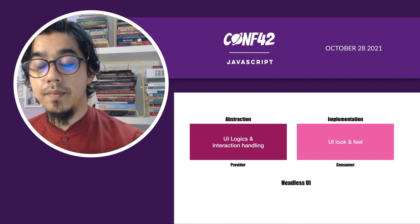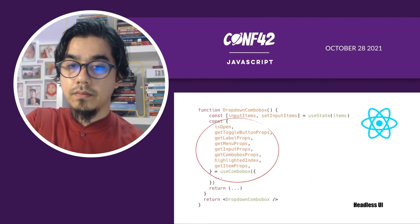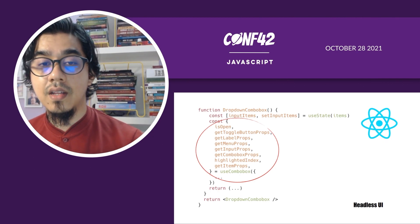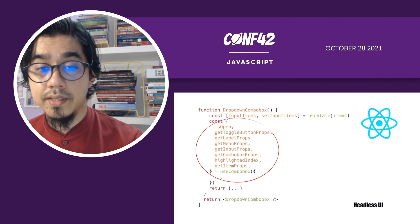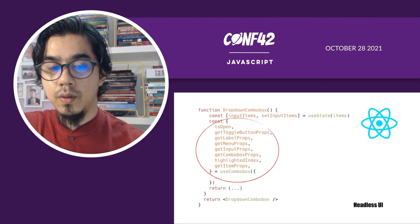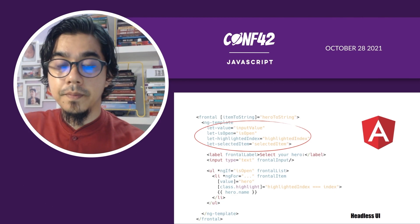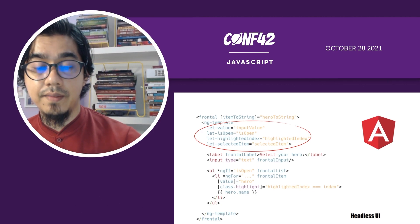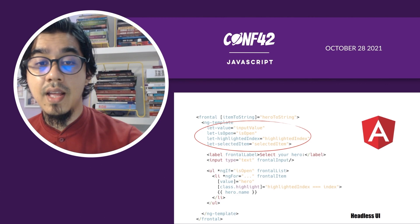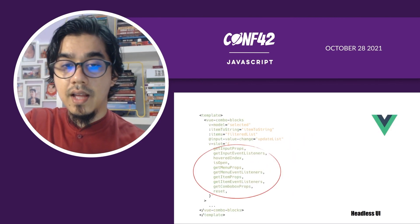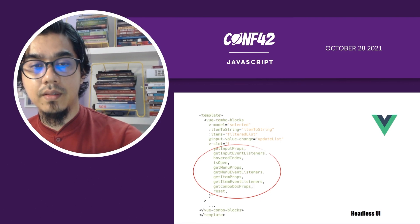Headless UI makes a separation between abstraction and implementation, where the provider gives the UI logic and interaction handling to the consumer design system, and the consumer implements the look and feel. This is an example of headless UI in React.js — as you can see in the red circle, those are the UI logic and UI interaction handling methods and properties, which are used to develop a combo box. This is also shown in the Angular way and the Vue.js way, where the same UI logic and interaction handling are provided as properties and methods.